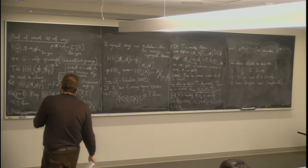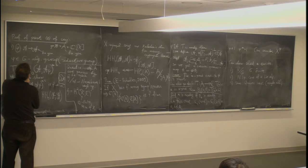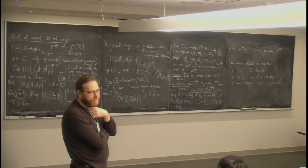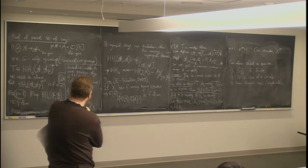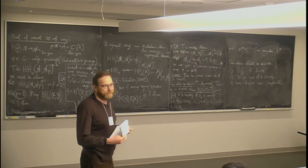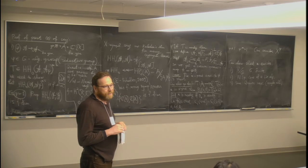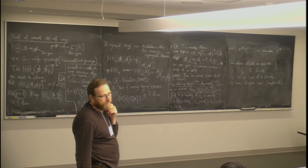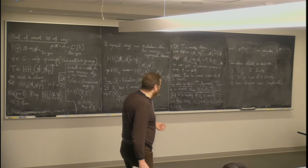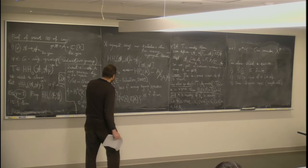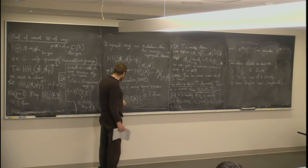Is there an index formula of Fedosov-Nest-Tsygan type for this trace or the deformed algebra in this example? Probably there is, but I haven't thought about it — this is all very recent. For the minimal orbit, you said there is a unique quantization map for each quantization. So the canonical automorphism is just the identity, and the trace space is one-dimensional because the relevant Hochschild homology is one-dimensional — this is just the G-invariants in the functions — so the trace is obvious in that case.